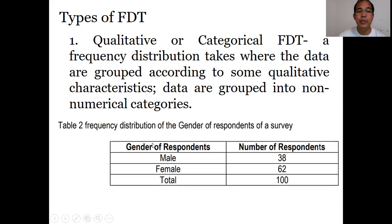Data are grouped into non-numerical categories. For example, the characteristics are grouped according to non-numerical categories which are male and female. The data is the frequency part: 38 for male respondents and 62 for female respondents, totaling 100 respondents.